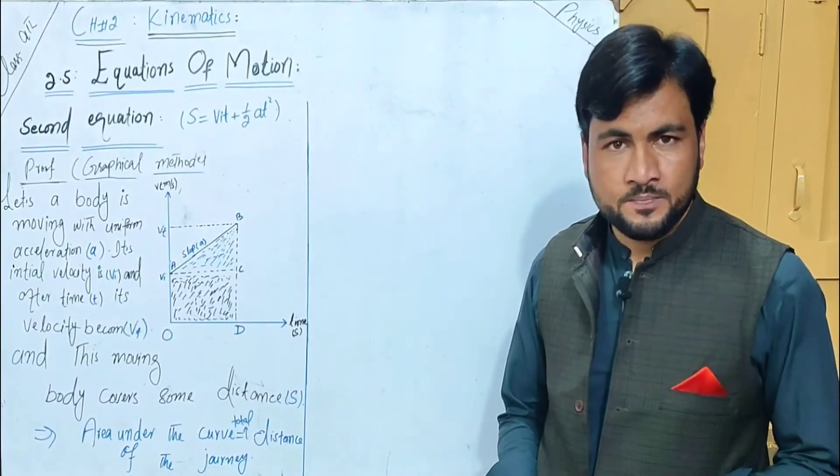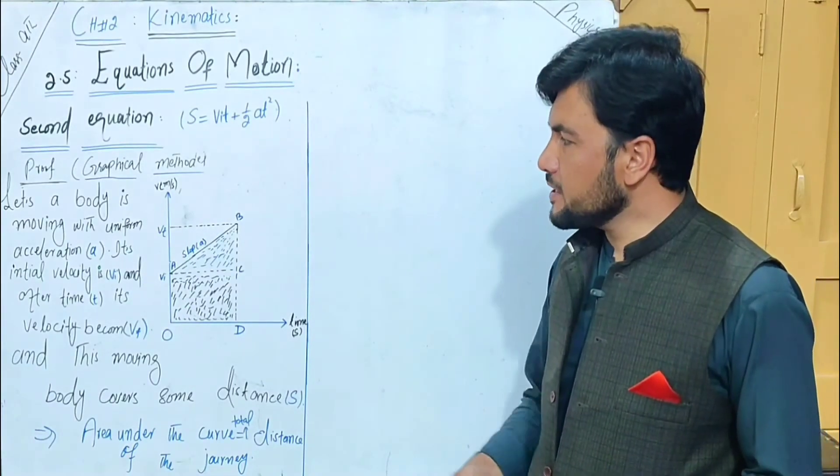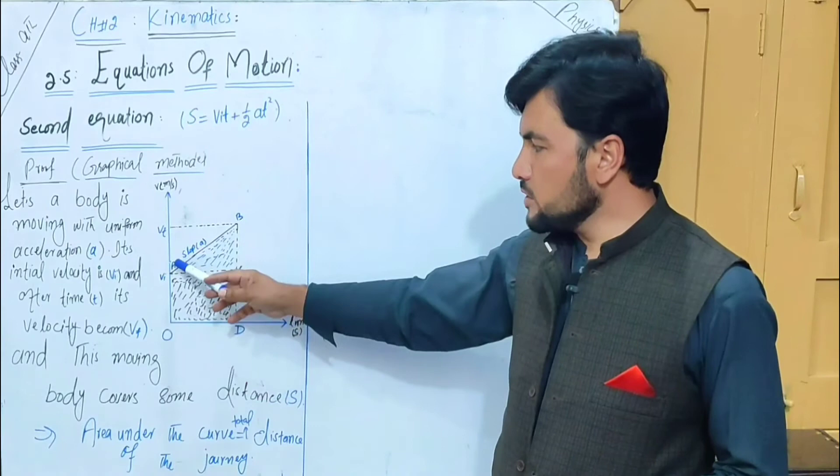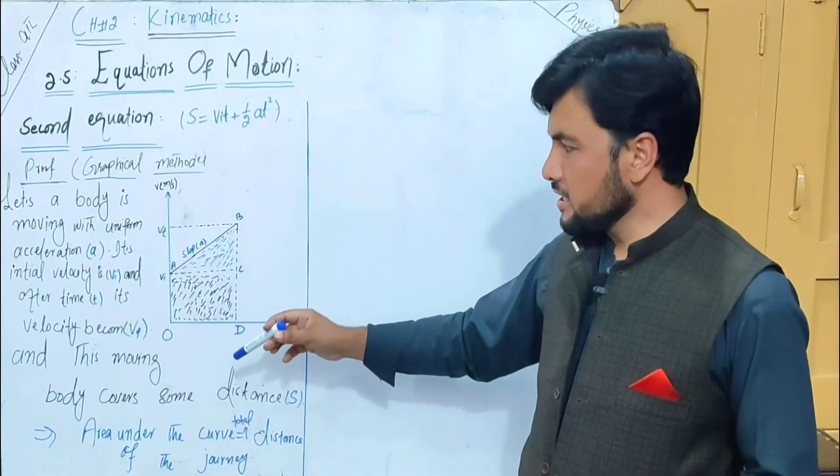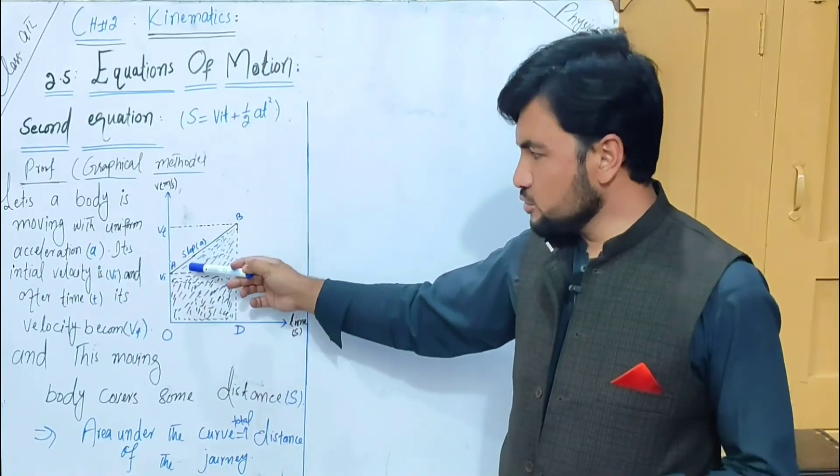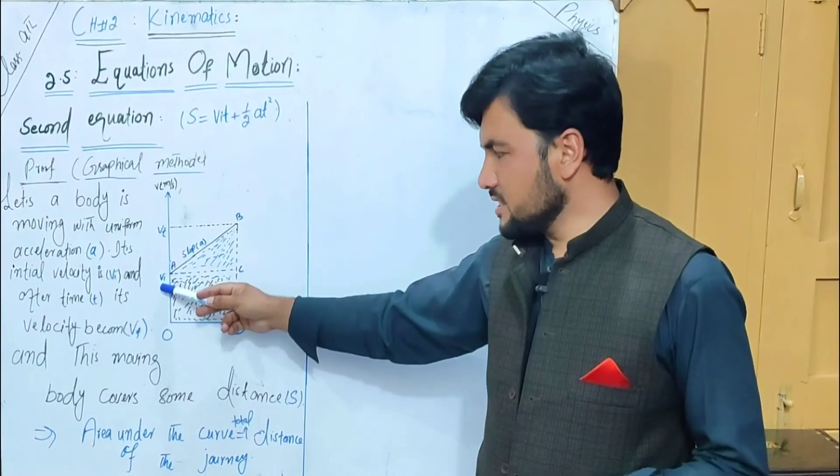The body has uniform acceleration during motion. The object is in motion. Its velocity is v_i, and after time t passes, the velocity becomes v_f.